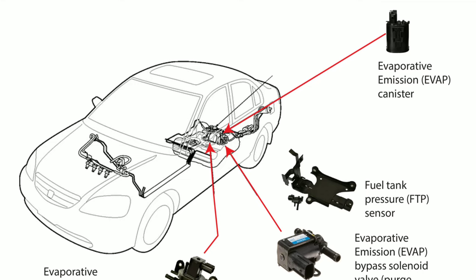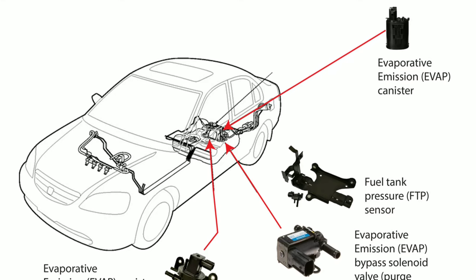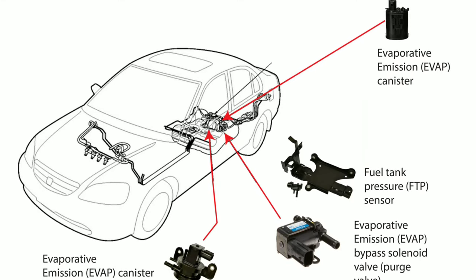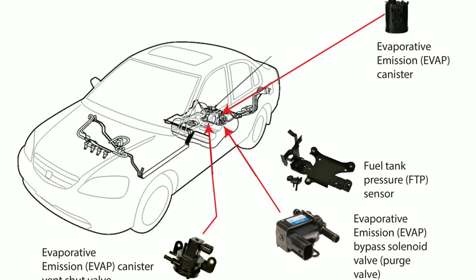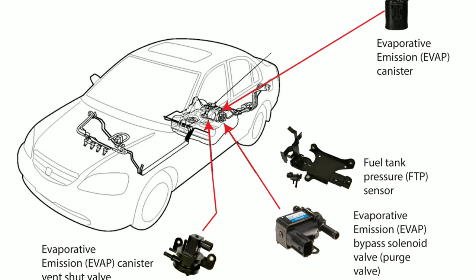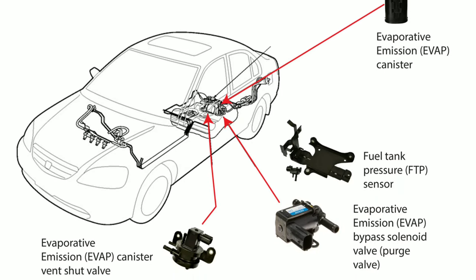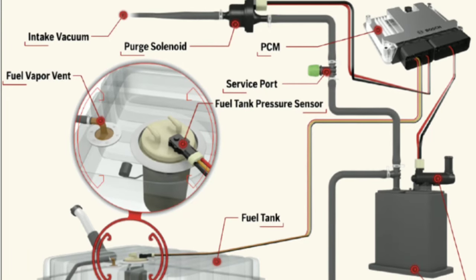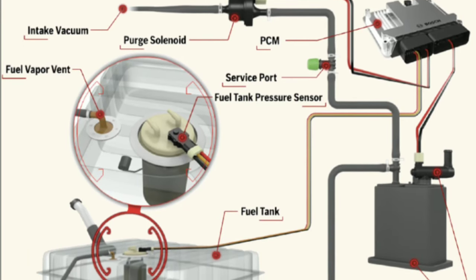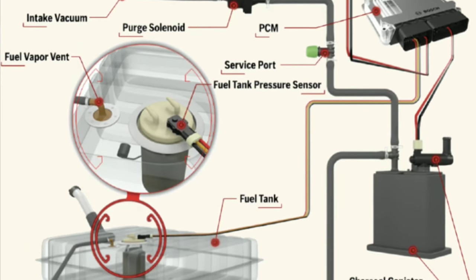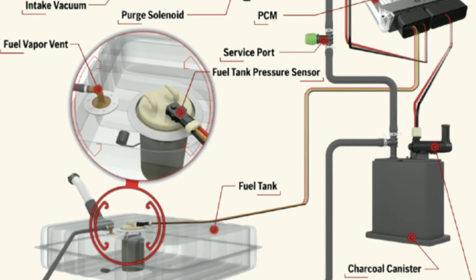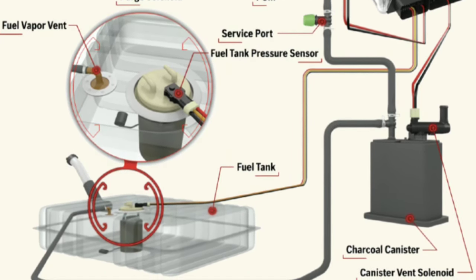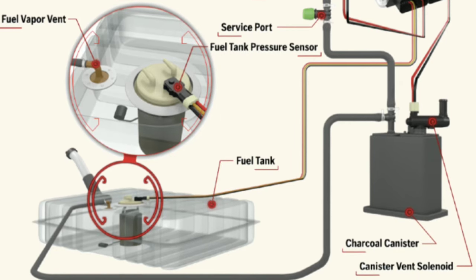The main purpose of the EVAP system is to stop fuel vapors from getting out of the exhaust system and into the air. When the fuel evaporates, it releases hydrocarbons that are bad for the environment. The EVAP system collects these fuel vapors and puts them in a canister so the engine can burn them when it's ready, cutting down hydrocarbon emissions.